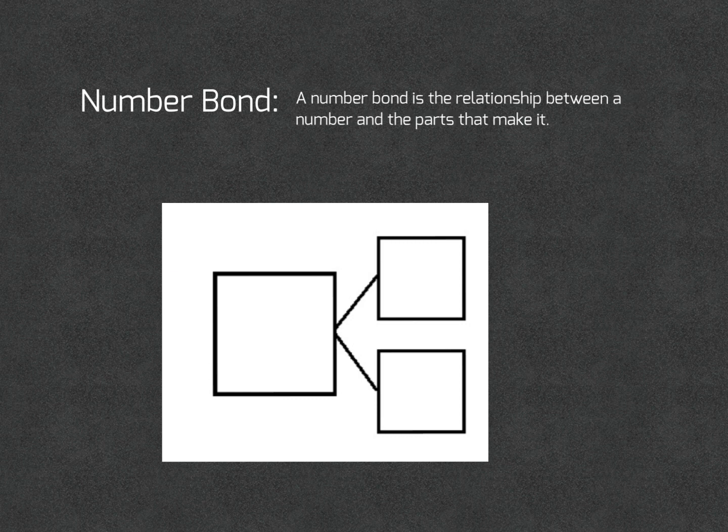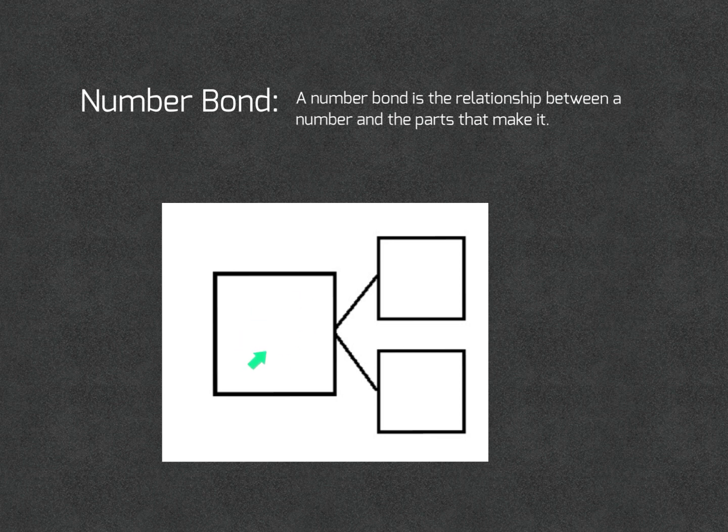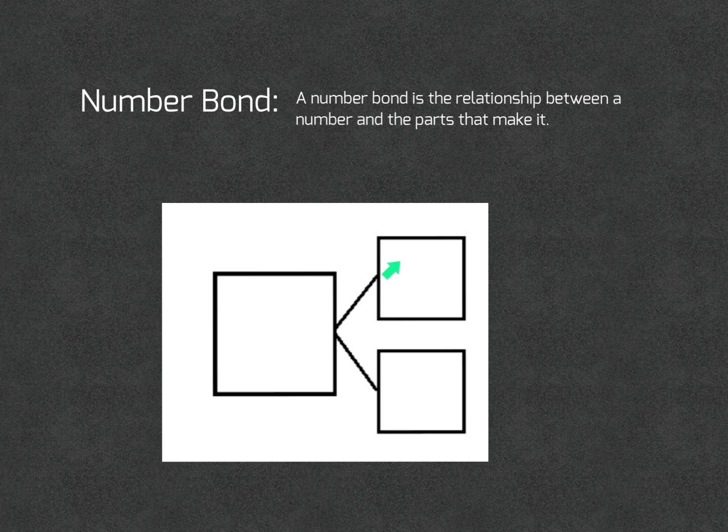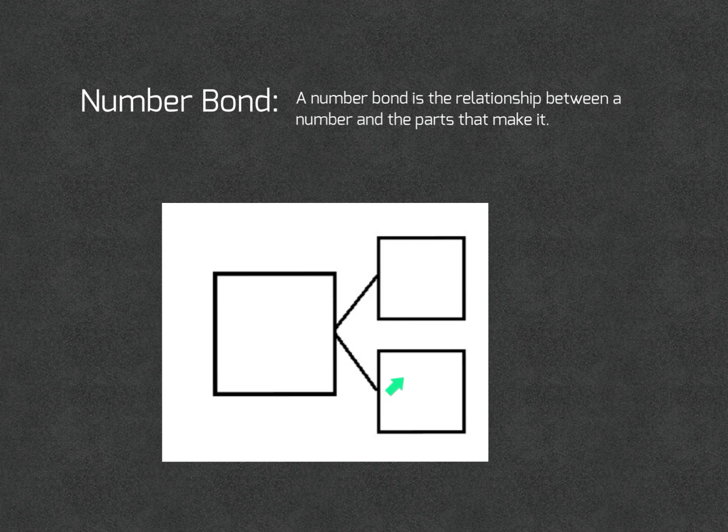Within the example of a number bond, this box here will have the total number in it. This box will have one part of the total number, and this box will have the other part of the total number.